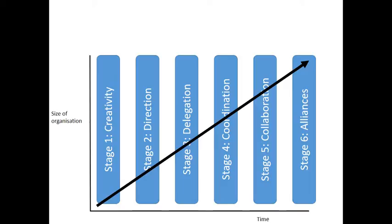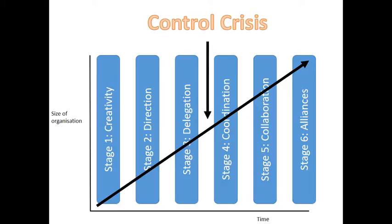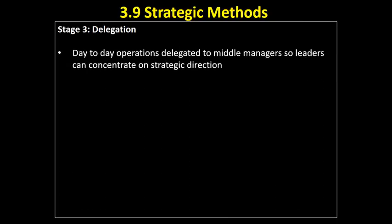So that's what we do — we come to stage three, which is delegation. We suffer at the end of the delegation stage a crisis of control. What's going on during the delegation stage? Well, first of all, the day-to-day operations have been delegated to middle managers. So it's not the head of marketing anymore — the head of marketing is overseeing things at the strategic level, but we've got middle managers now who are making decisions.